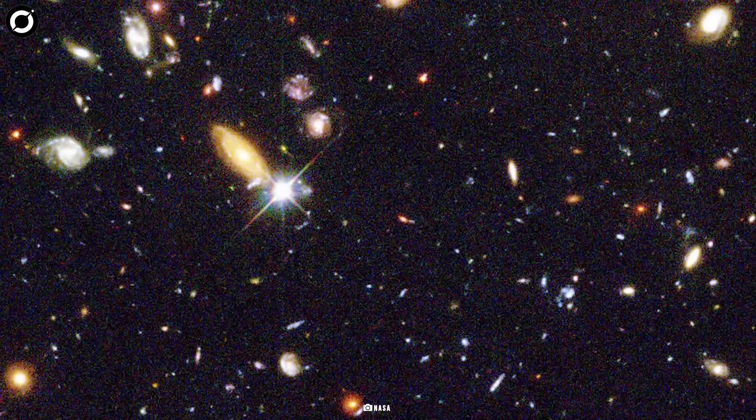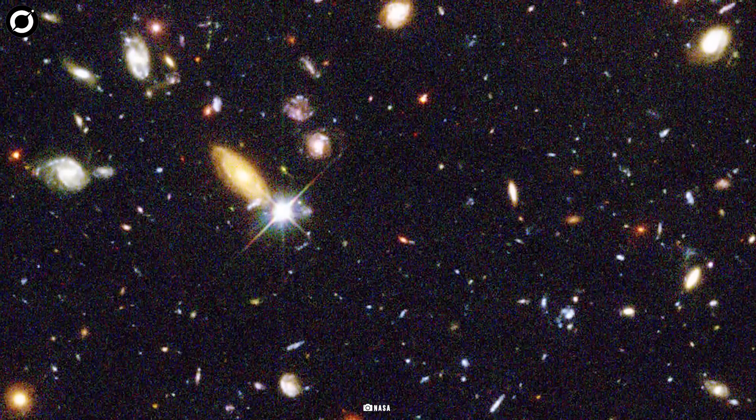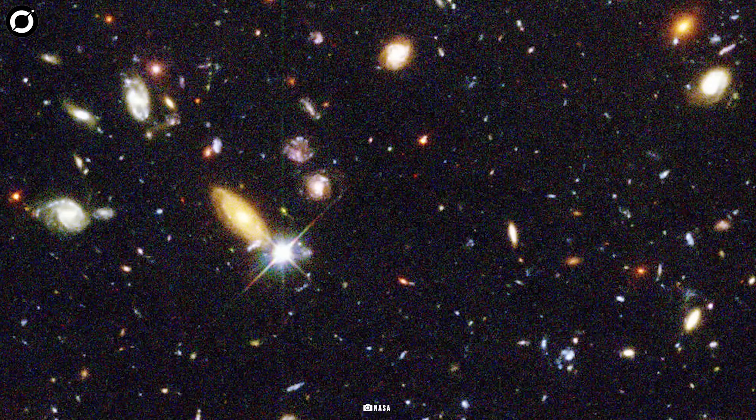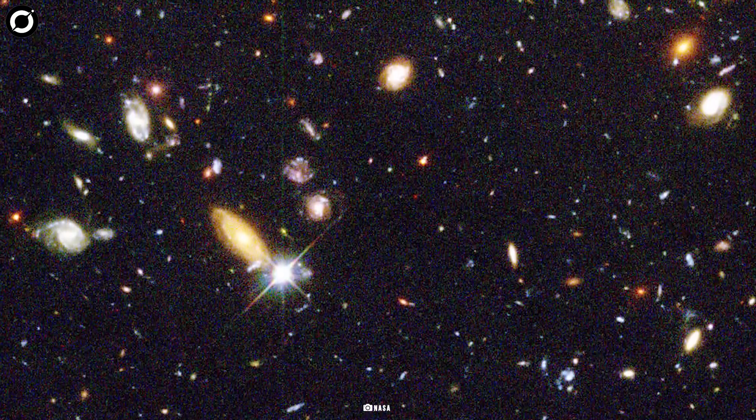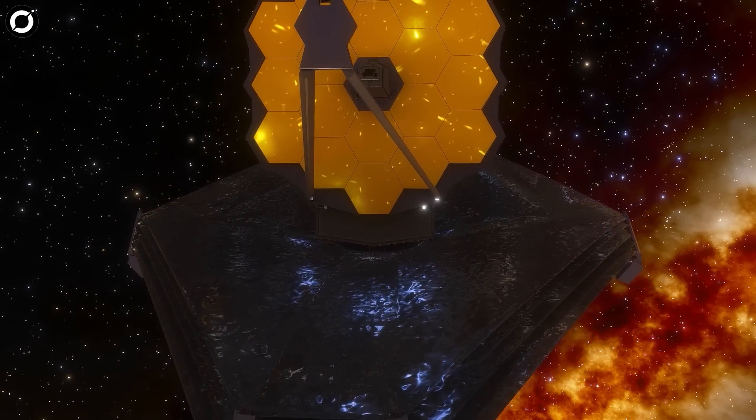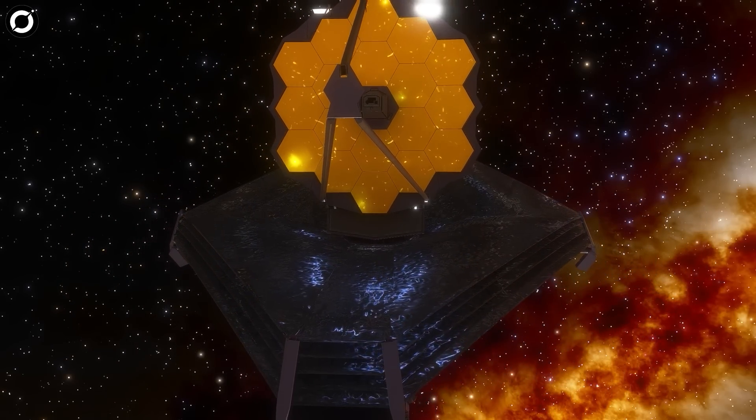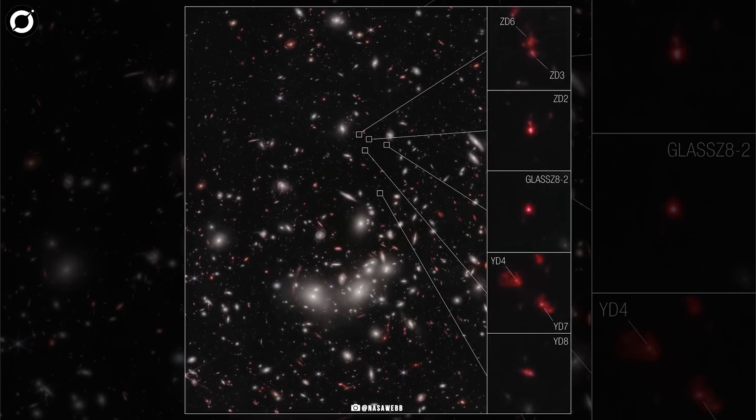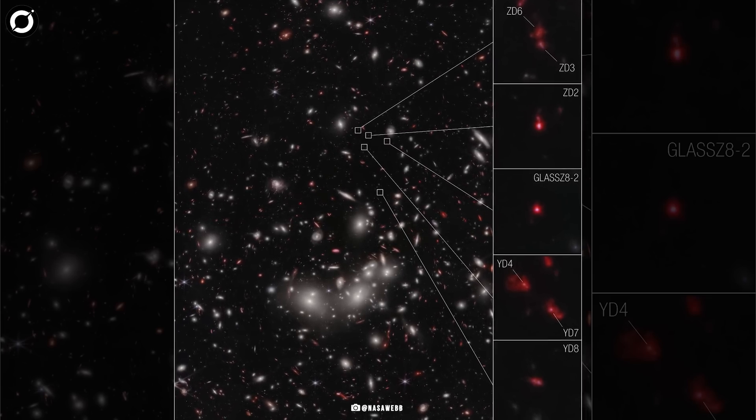All seven galaxies in the clump had been observed before with the Hubble Space Telescope, but scientists didn't know how far away they were or whether they were truly bound together. Because light takes time to travel from distant objects to Webb's position orbiting the sun, the telescope sees these galaxies as they were about 650 million years after the Big Bang.